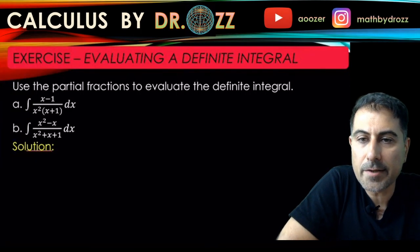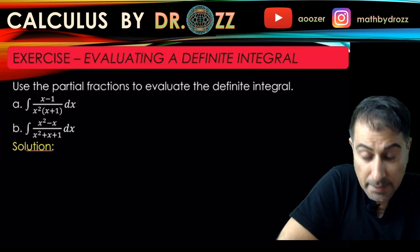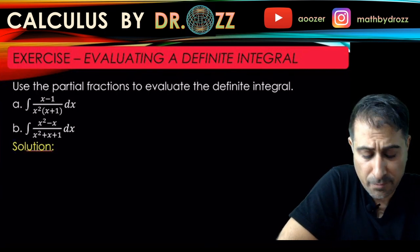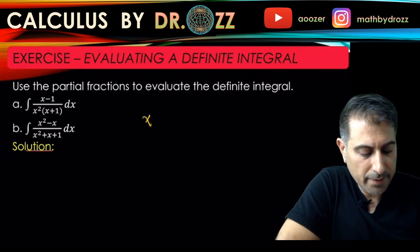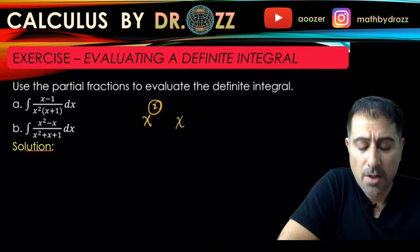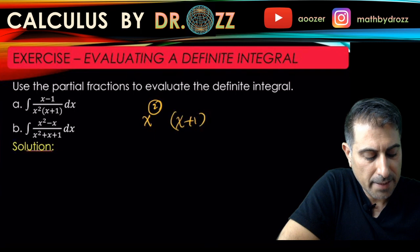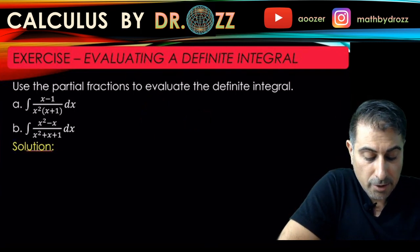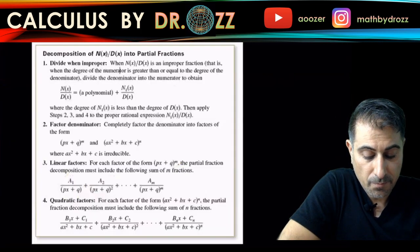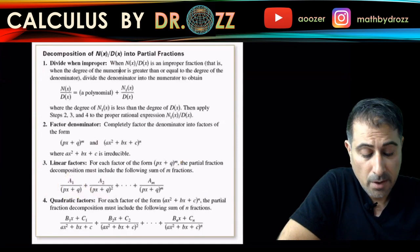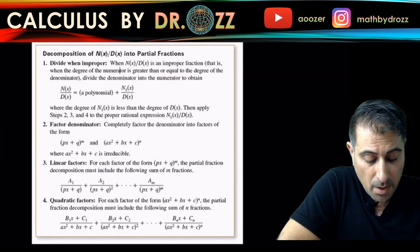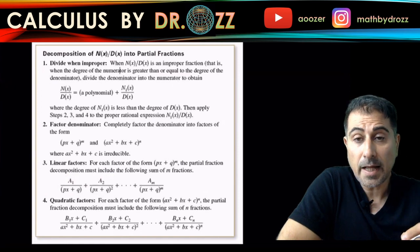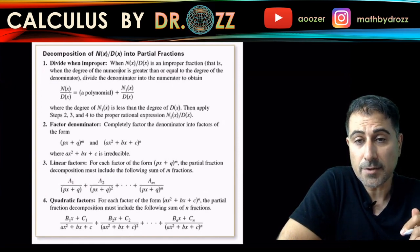All right, let's take care of part A. I have x minus 1 over x squared times x plus 1. The denominator is already factored, and one factor comes with power 2. So x comes with power 2, and the other one is just a linear factor.